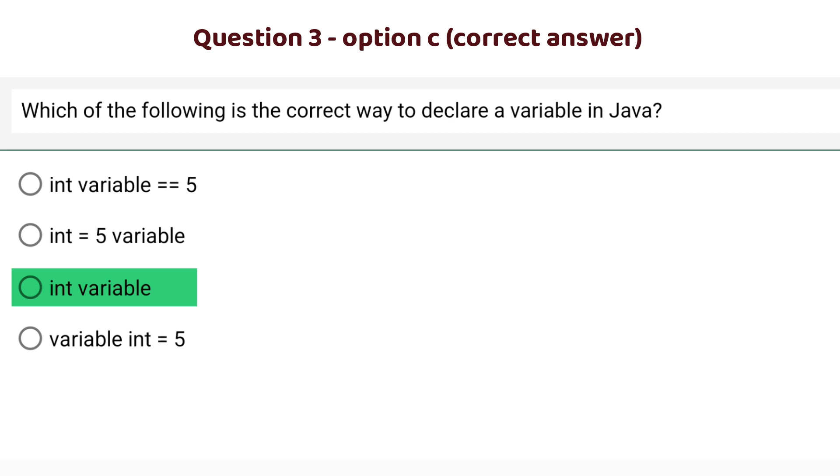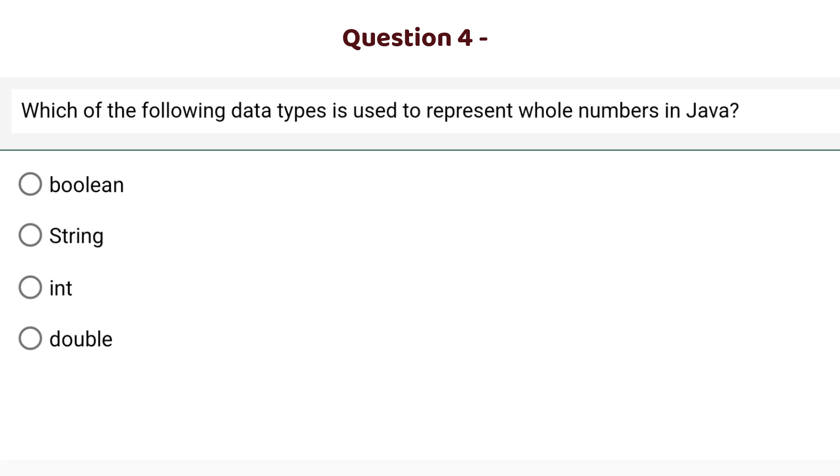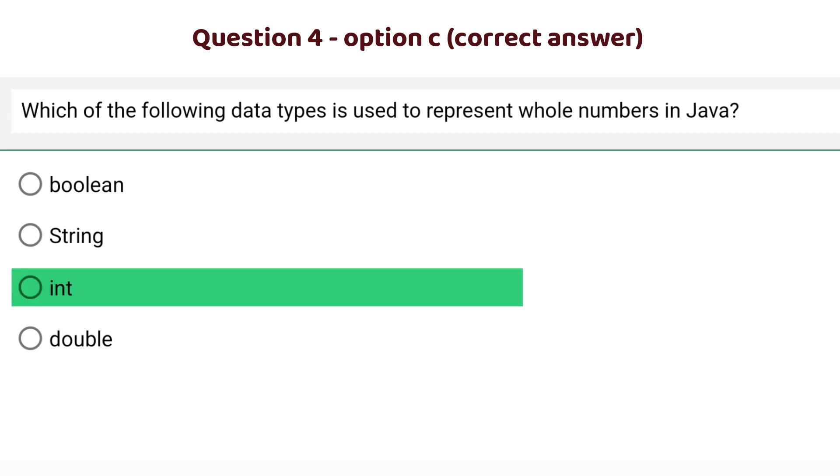Next question: Which of the following data types is used to represent whole numbers in Java? a) boolean, b) string, c) integer, d) double. The correct option is option number c: integer.